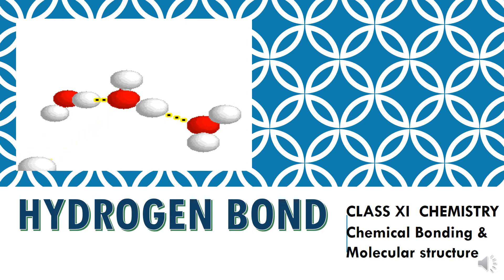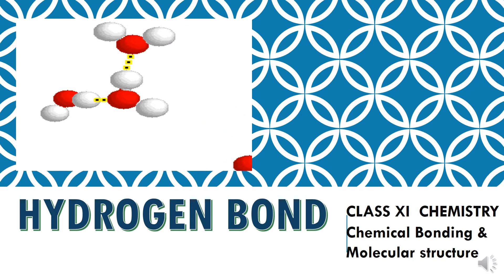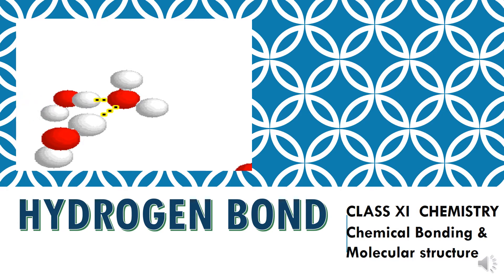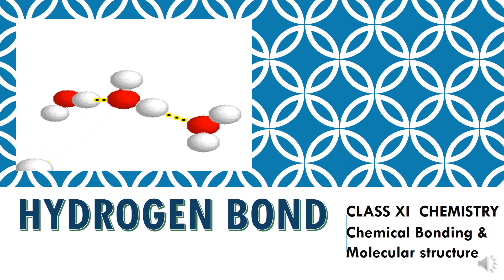Good morning students. Under the chapter on chemical bonding and molecular structure, we have discussed ionic bond formation and various concepts behind chemical bond formation. The next topic in the chapter is hydrogen bond. Let us see what a hydrogen bond is, how it is formed, and what are the consequences of hydrogen bonding in a molecule.